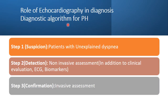The diagnostic algorithm of pulmonary hypertension involves three steps. The first step is suspicion — suspicion of pulmonary hypertension in patients with unexplained dyspnea. The second step is detection — detection of pulmonary hypertension by non-invasive assessment in addition to clinical evaluation, ECG, and biomarkers. The third and final step is confirmation using invasive assessment by right heart catheterization.